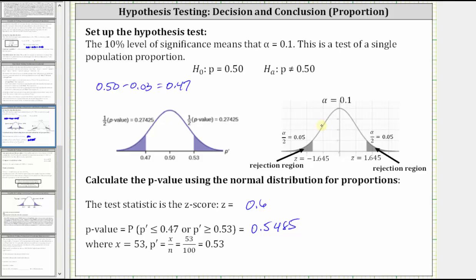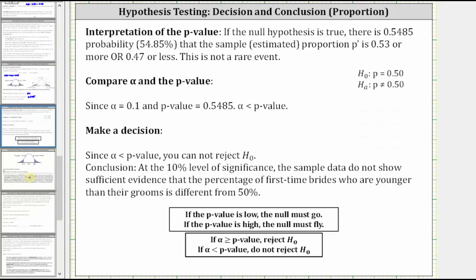But before we formally conclude this, let's interpret the P value and then compare to alpha. The interpretation of the P value is if the null hypothesis is true, then there is a 0.5485 probability or 54.85% chance that the sample or estimated proportion is 0.53 or more or 0.47 or less. Meaning this is not a rare event.